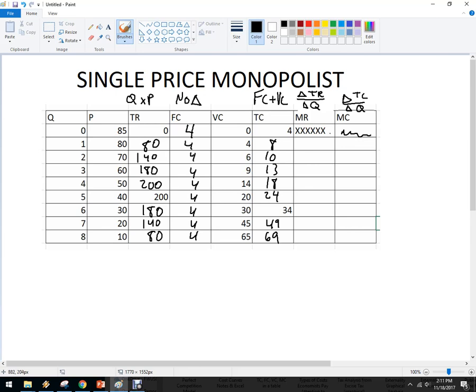So the marginal cost, if you want to calculate that right here, this is from four to eight, this is four, from eight to 10, two, three, five, six, 10, 15, and 20.